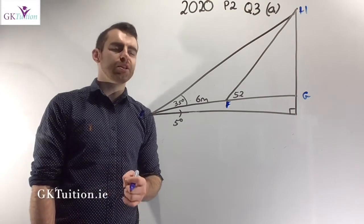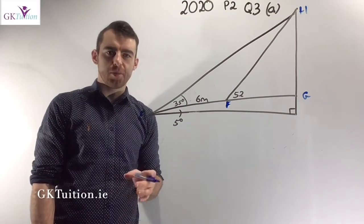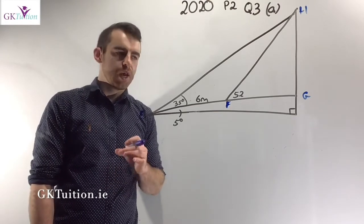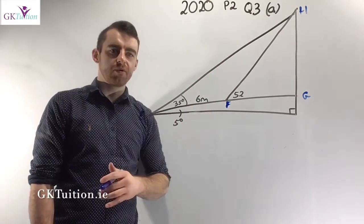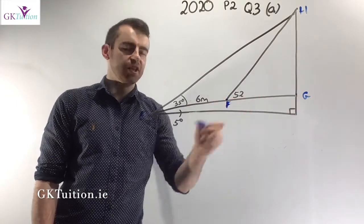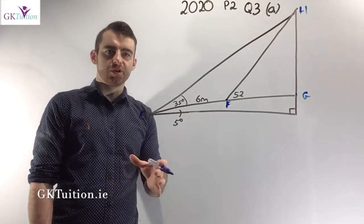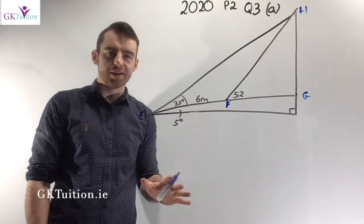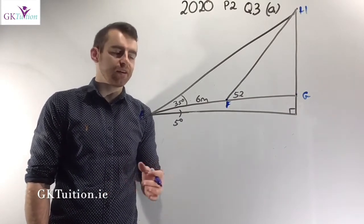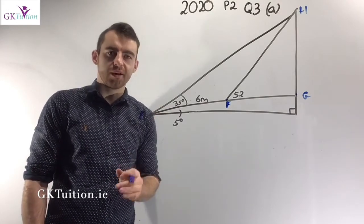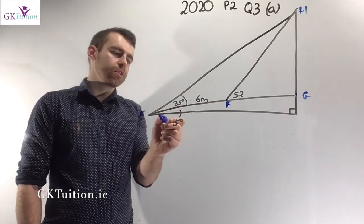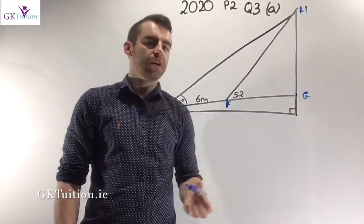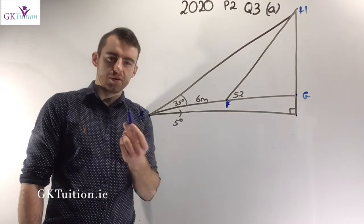In this tutorial I want to talk about 2020 paper 2 question 3 part A, which is all about trigonometry. We've been given a diagram and asked to find the distance from F to G. Before carrying out any sine rule or cosine rule, we should fill in the angles. Looking at the triangle from E to the base to G, you'll notice it's a right angle triangle.